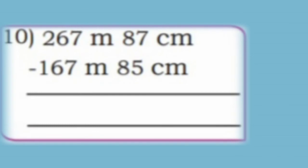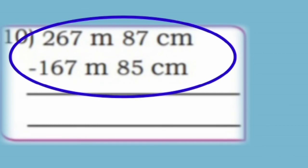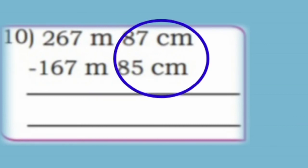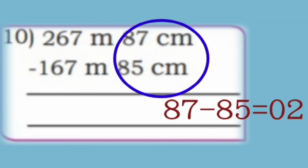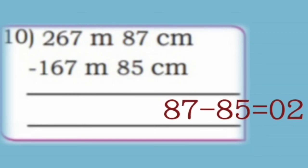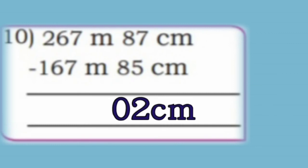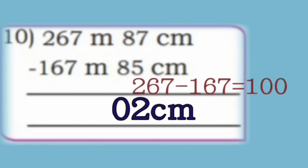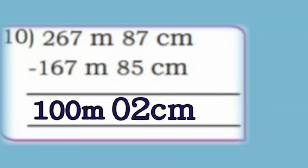Let us solve tenth one: 267 meter 87 cm minus 167 meter 85 cm. First subtract centimeters: 87 minus 85, that is 2 cm. Next subtract meters: 267 minus 167 is 100 meter. So the answer is 100 meter 2 cm.